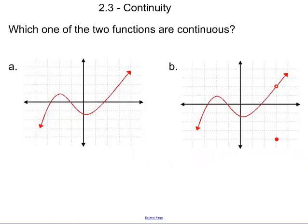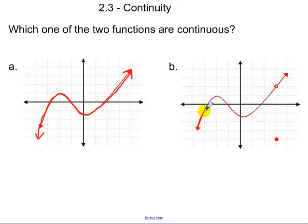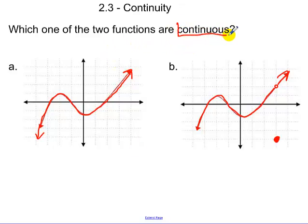Now look at how we would draw A. If I were to trace over A, looking at all the function values, notice how I'm not lifting up my pencil at all as I write through the function. But now B — look at what I'm tracing over B: writing through the function, I have to lift up my pencil, go down there for that function value at 3, then lift it back up and continue on. So which one of the two functions are continuous? A would be our continuous function and B is what we call discontinuous.